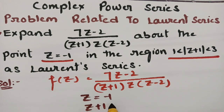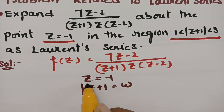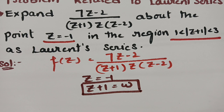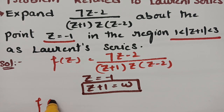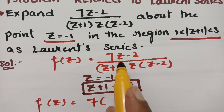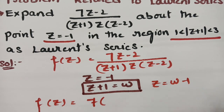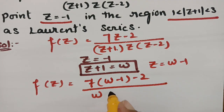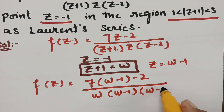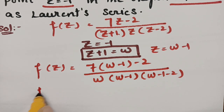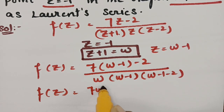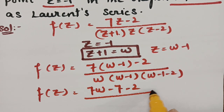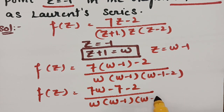Let z + 1 = w. Then z = w - 1. So f(z) can be transformed: in place of z I write w - 1, giving numerator 7(w-1) - 2 = 7w - 9, and the denominator becomes w(w-1)(w-3).